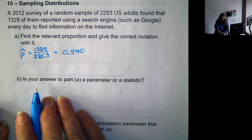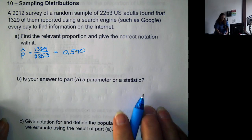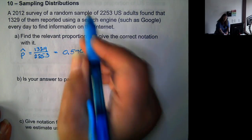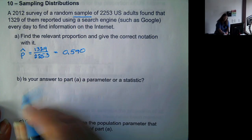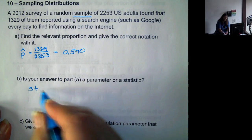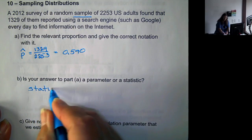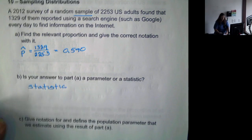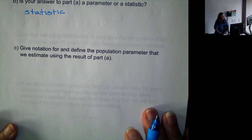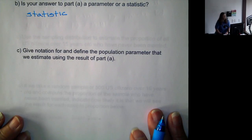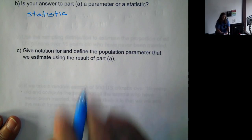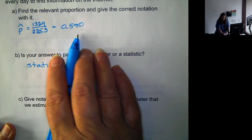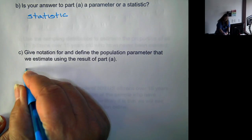Now, is this a parameter or a statistic? It comes from a sample, so it is a statistic. Since it's a statistic, we want to give the notation for the population parameter that is estimated based on P-hat. The notation would be P.